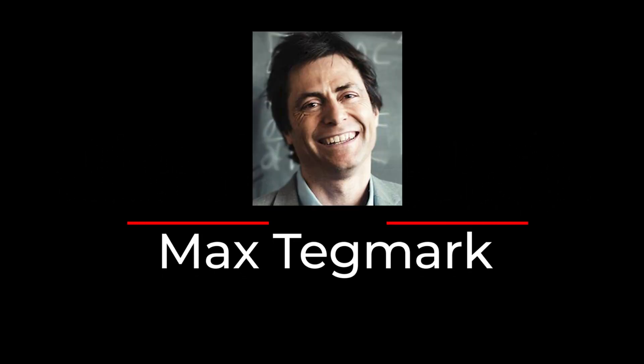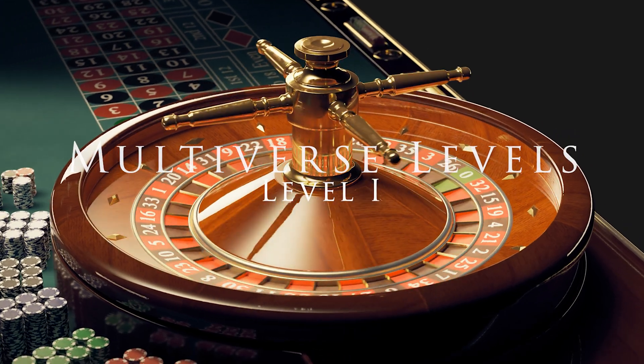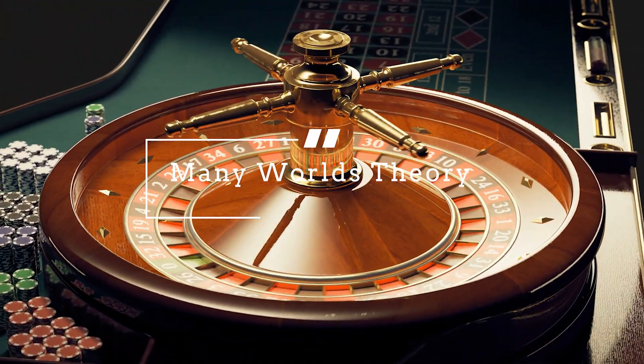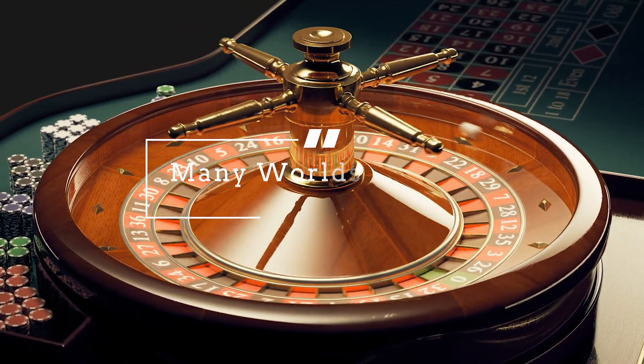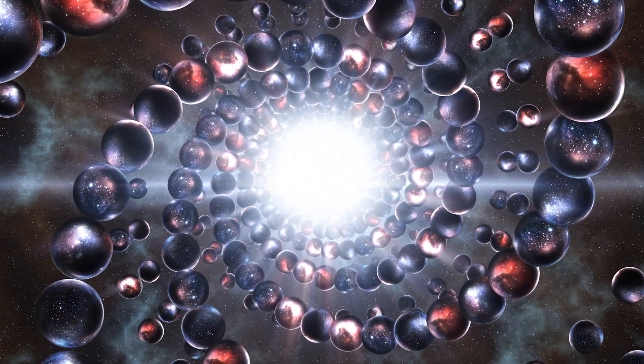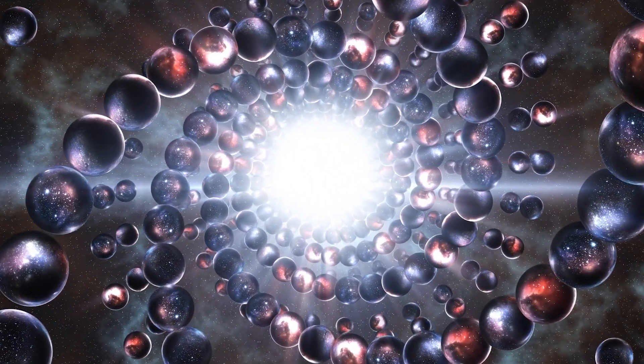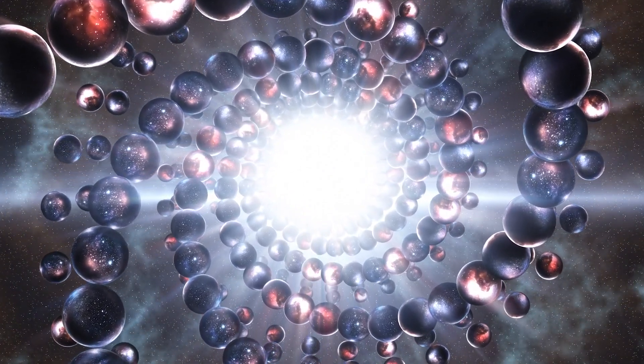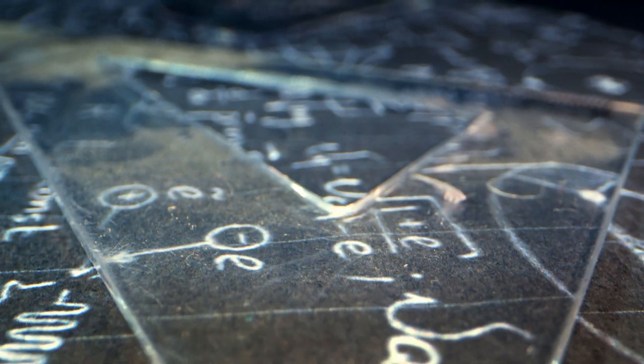Let's talk about the different levels of the multiverse. According to Max Tegmark, a theoretical physicist, there are four different levels of the multiverse. A level one multiverse, also known as the many-worlds theory, suggests that every possible outcome of every event that has ever occurred or will occur in the universe actually occurs in a separate universe. According to this theory, the multiverse consists of an infinite number of parallel universes, each with its own sets of physical laws, constants, and histories.